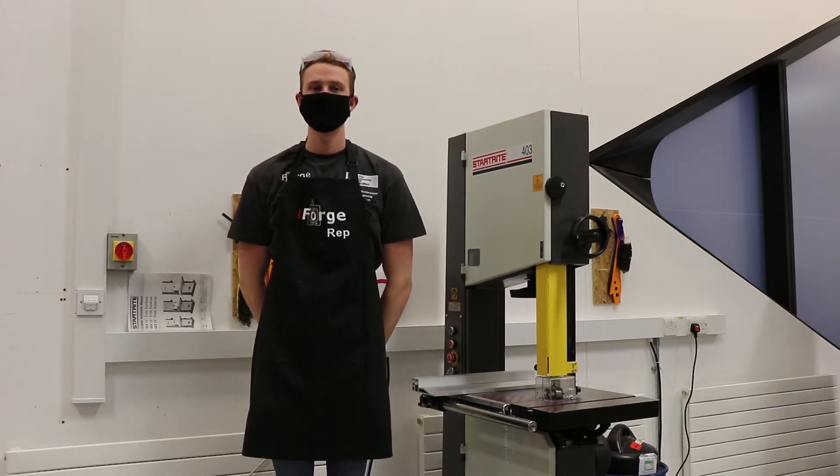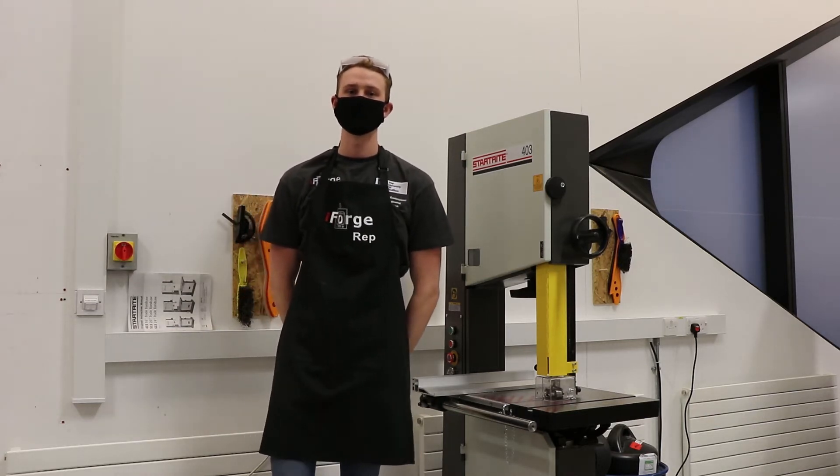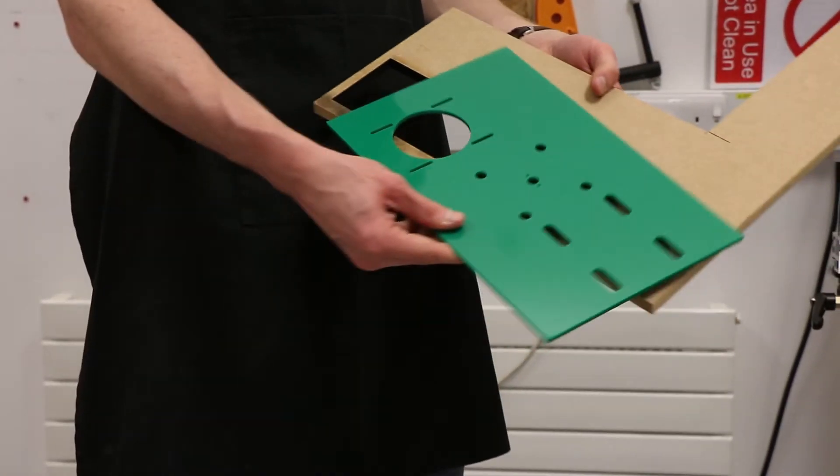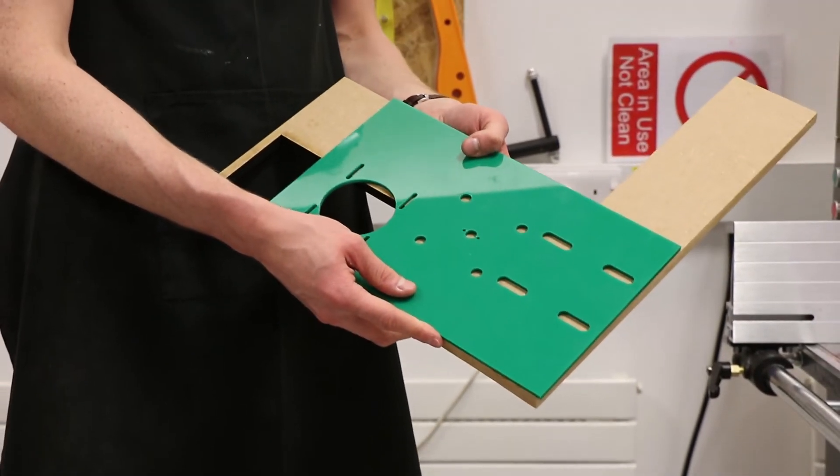In this video we're going to show you how to correctly and safely operate the bandsaw. The bandsaw allows you to cut plastics and wood in curved or straight lines. This makes it a pretty versatile piece of equipment.